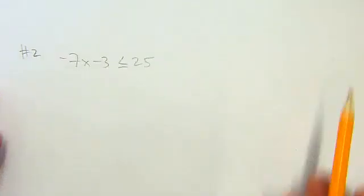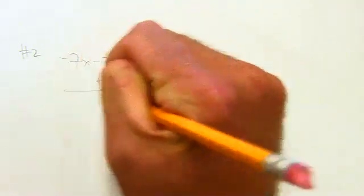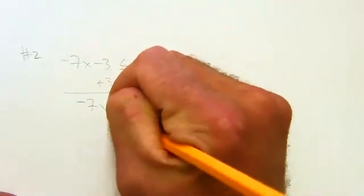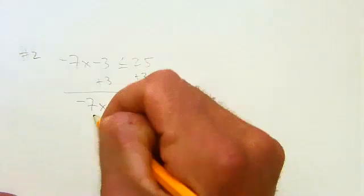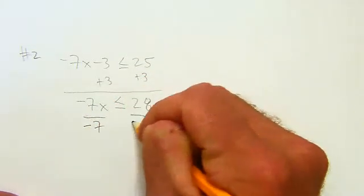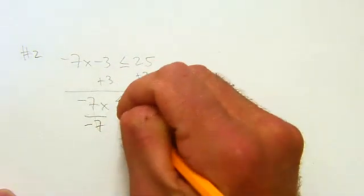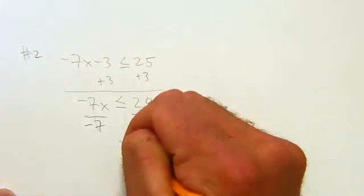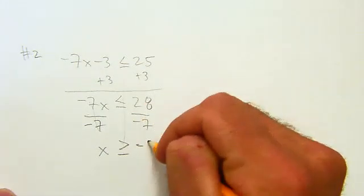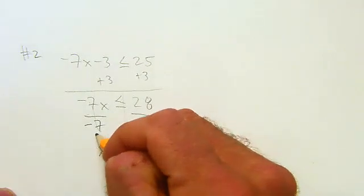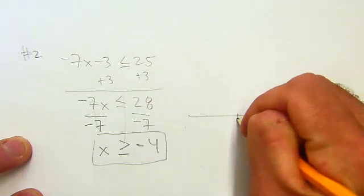Add 3 on each side. -7x less than or equal to 28. Okay, the trick you might remember: when you divide each side by a negative, or multiply each side by a negative - in this case divide each side by a negative - you actually do got to flip this, flip the sign around the other way. Okay, so x greater than or equal to -4.